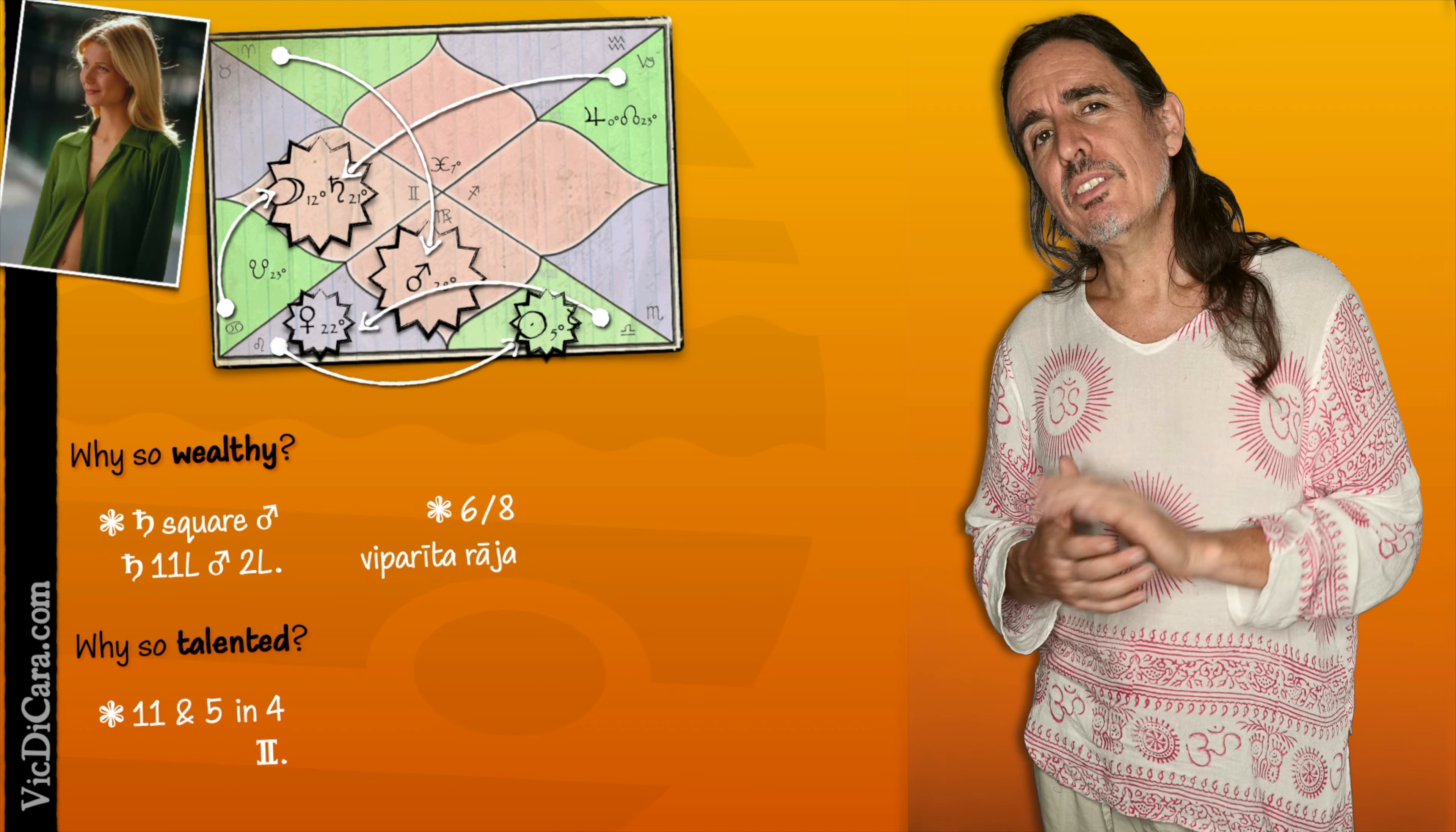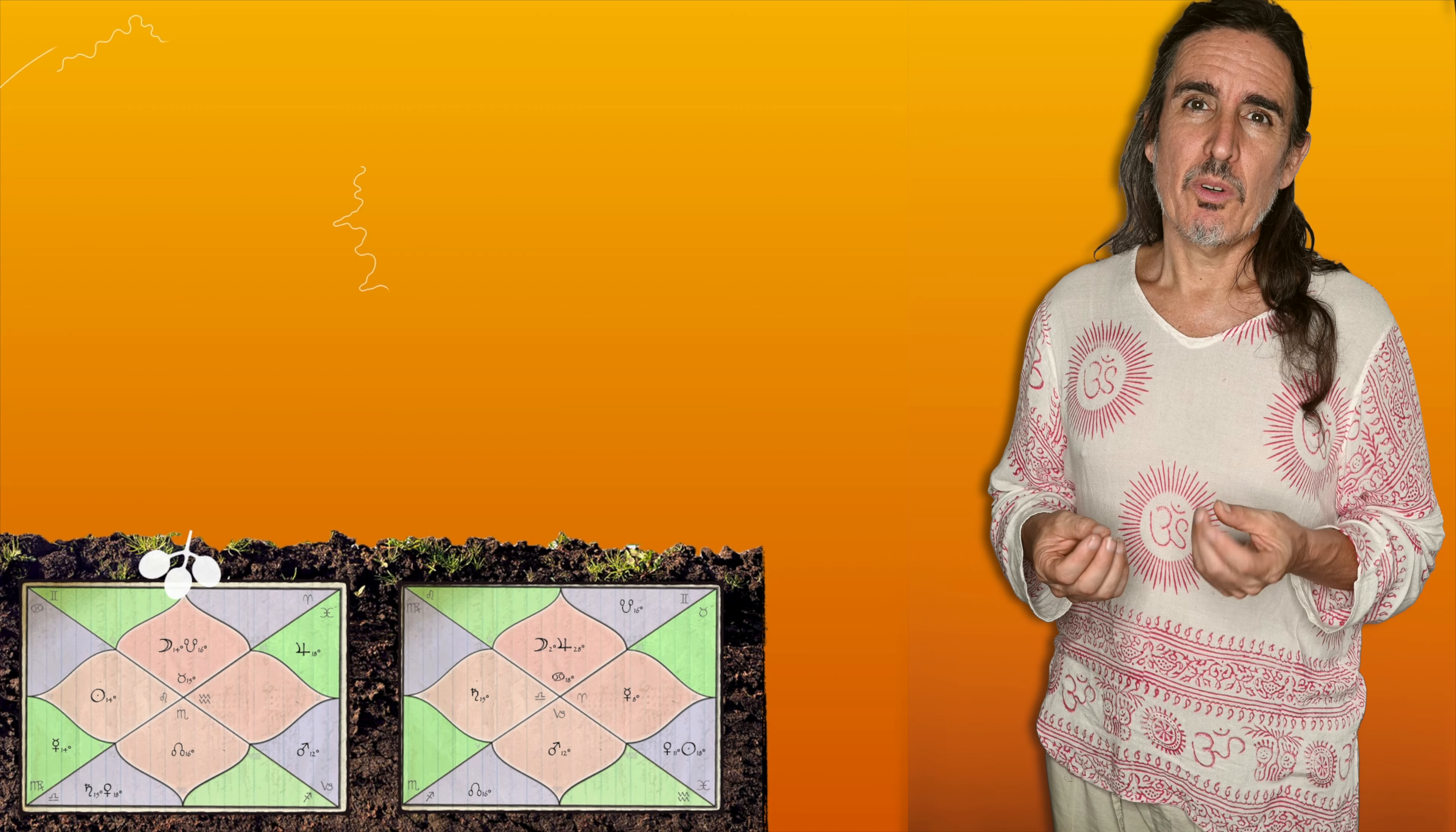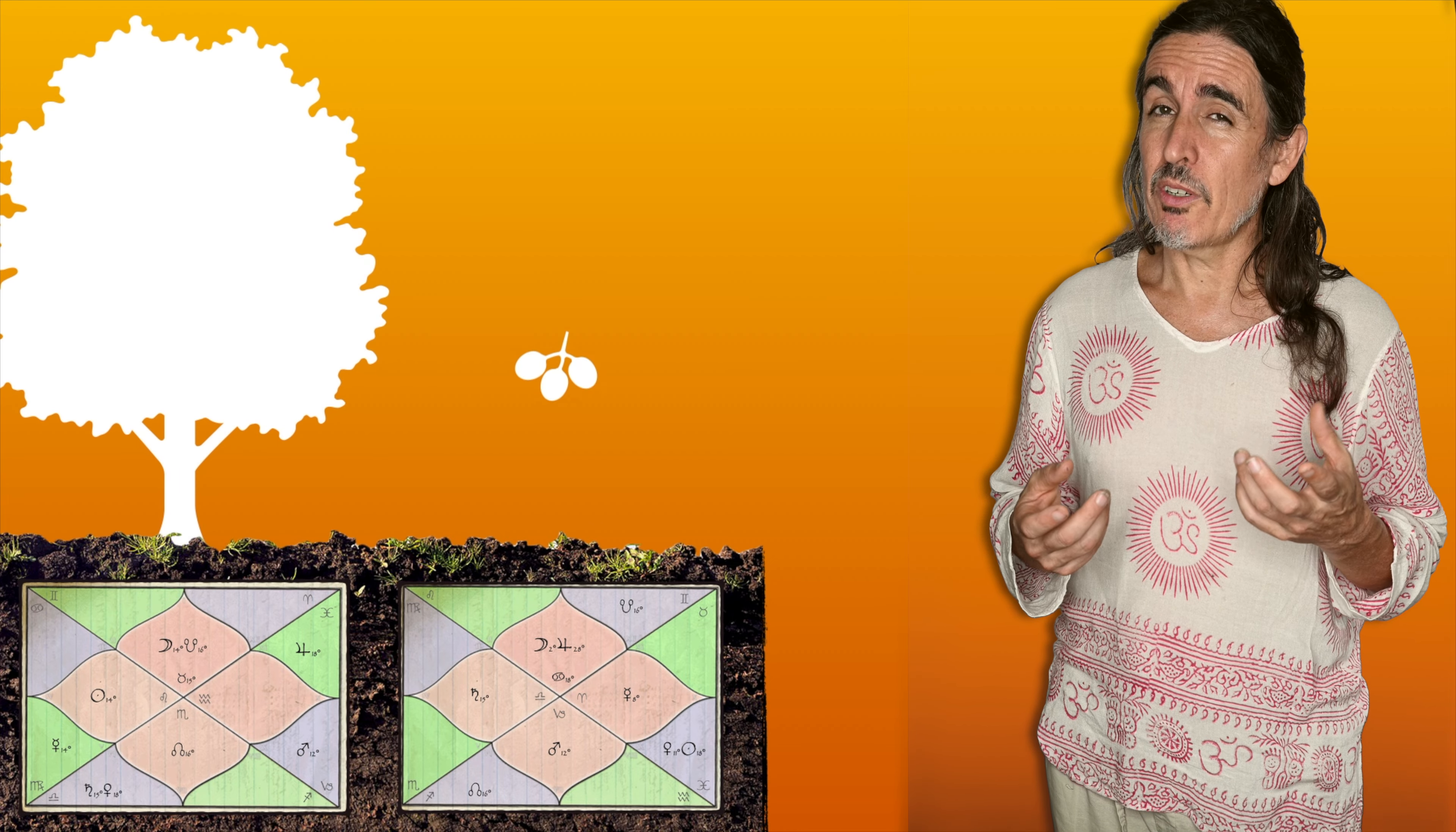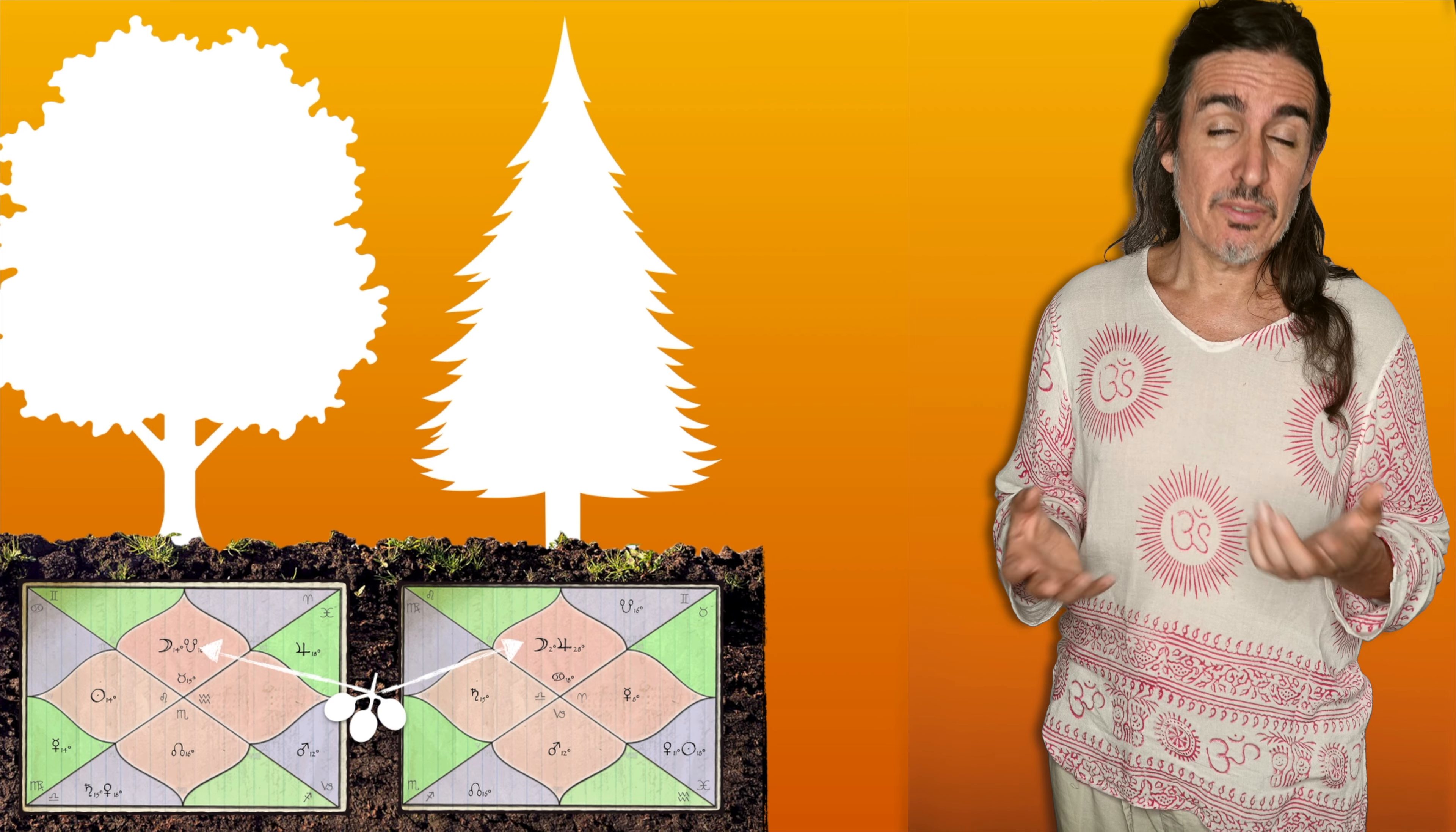So now you see how important it is to look at the whole chart. The whole chart is something like the farm and the farmer, whereas different individual parts of the chart, like Jupiter and the 11th and Capricorn, is like a seed. So the same seed being taken care of by different farmers grows differently.